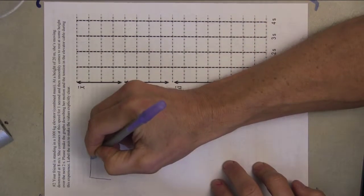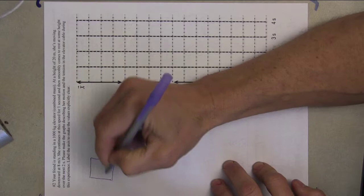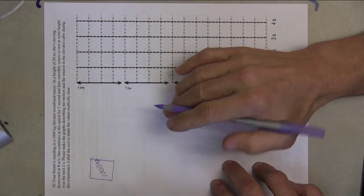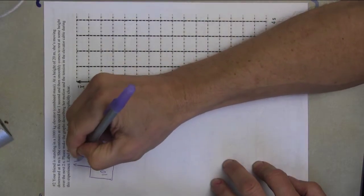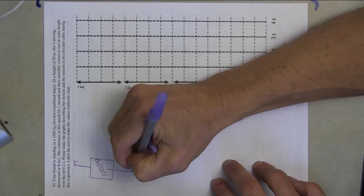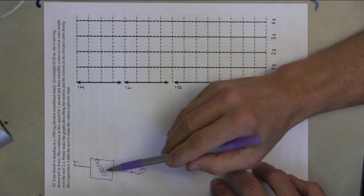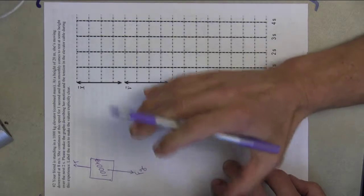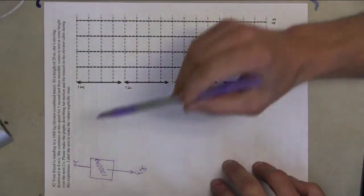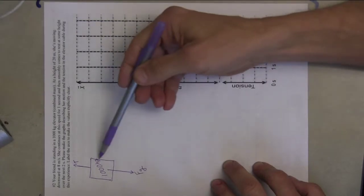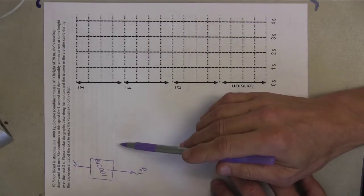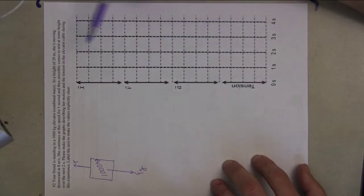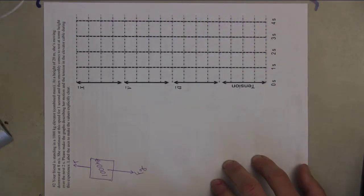My friend is standing in a 1,000 kilogram elevator. I'm not asked about my friend or a normal force — I look at the tension pulling upward and the force of gravity pulling down. So it's the 1,000 kilogram elevator that is the body in question. I want to know the tension, and since these forces cause acceleration, I'll use a dynamics lens — but I don't know the acceleration yet.